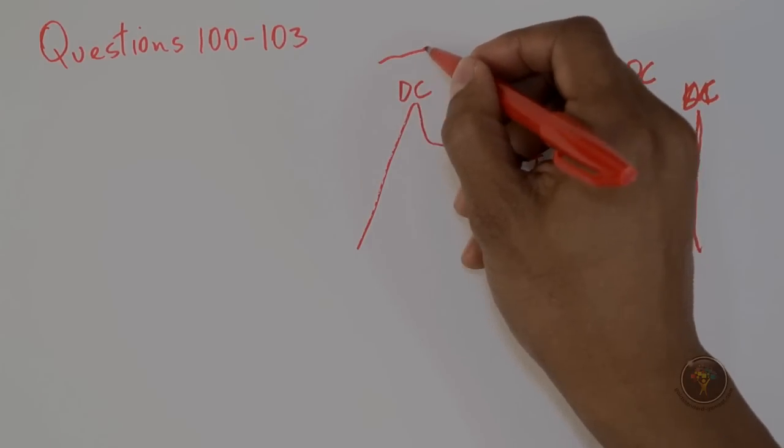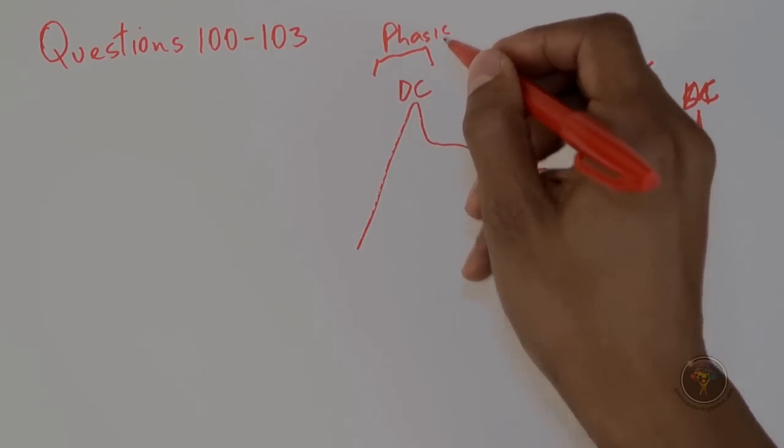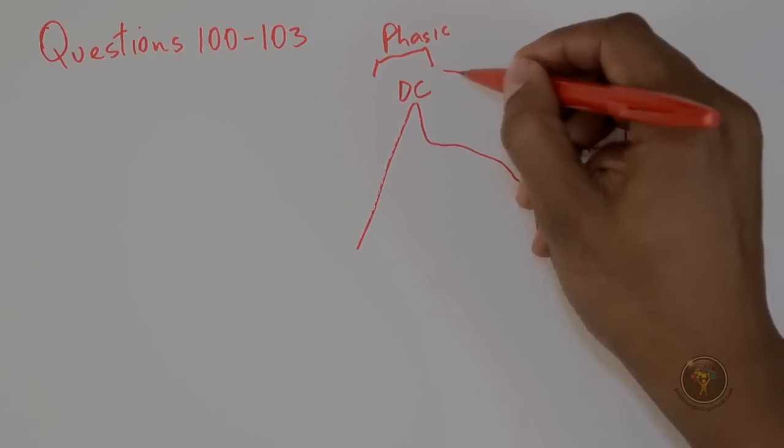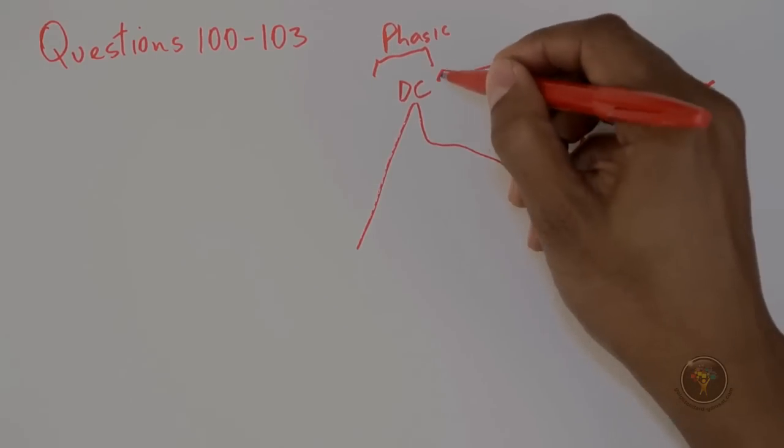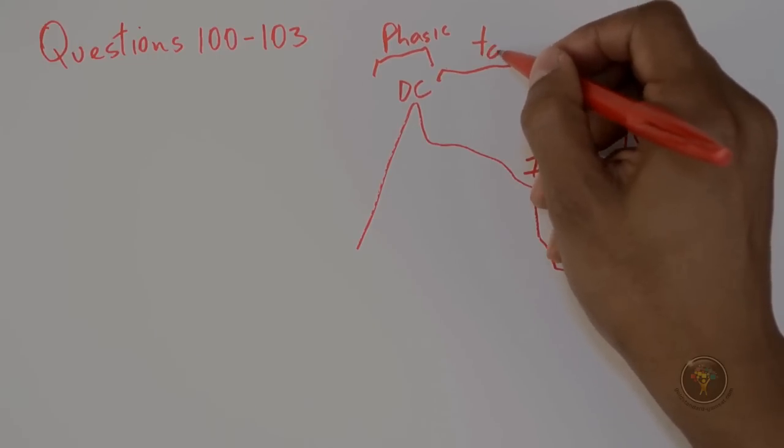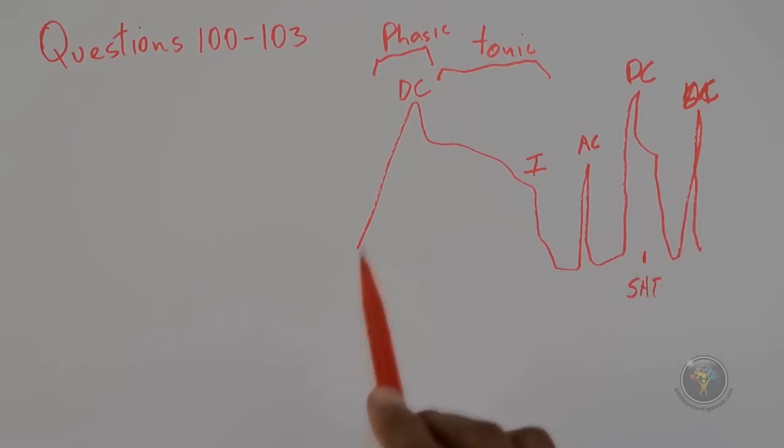This depolarization, this contraction, so it goes up suddenly. In fact they even tell you that there's a portion that is phasic, responding to stimulation with a brief contraction. And then they say that there's a portion which is tonic, responding to stimulation with prolonged contraction.